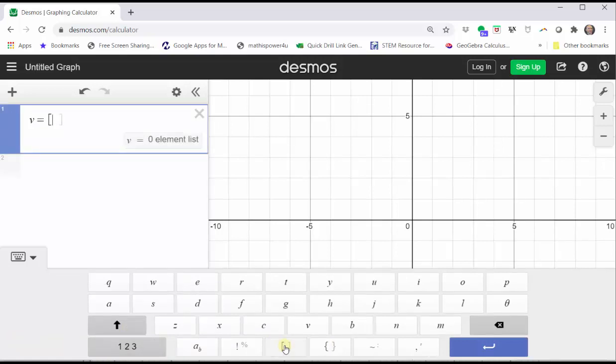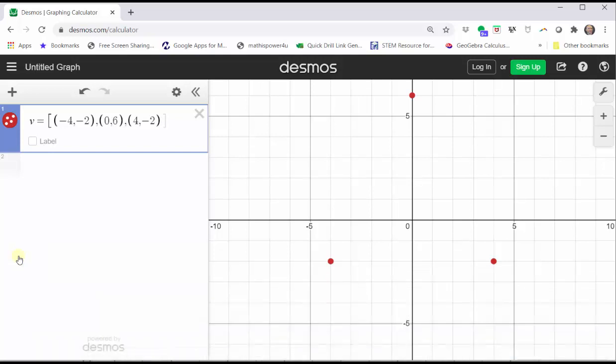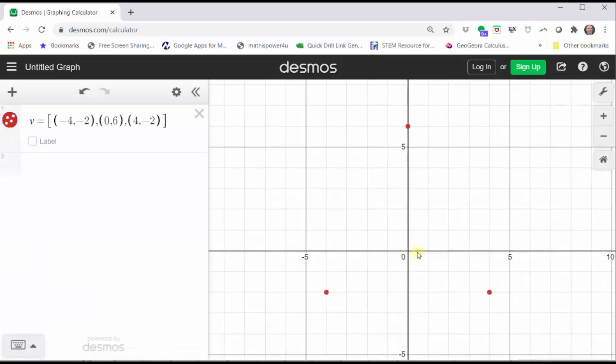Now we enter the ordered pairs separated by commas. We have negative four comma negative two, zero comma six, and four comma negative two. If we close the Desmos keypad, notice how we can see the ordered pairs plotted as points on the coordinate plane.